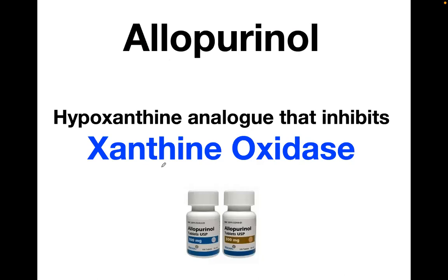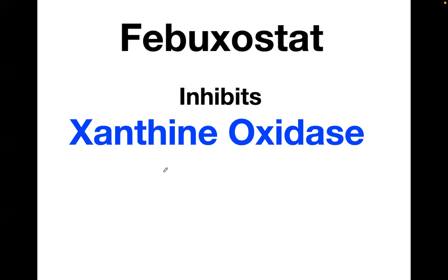Allopurinol is a hypoxanthine analogue that inhibits xanthine oxidase. There is another drug which also inhibits xanthine oxidase: febuxostat (common brands: Uloric or Feburic). One advantage of febuxostat is it has fewer hypersensitivity or allergic reactions, particularly Stevens-Johnson syndrome, which is common with allopurinol.